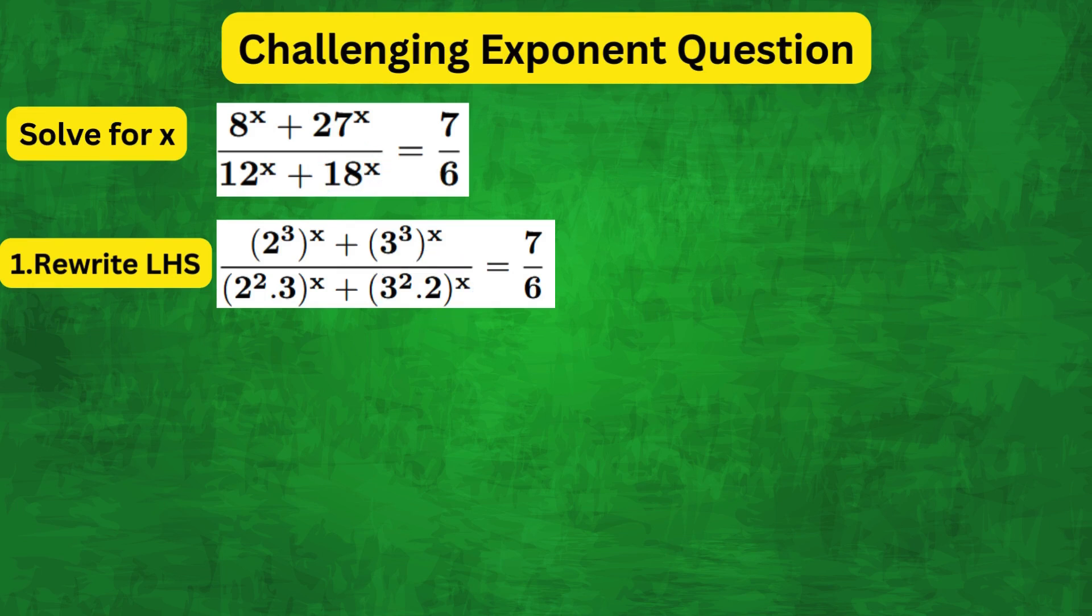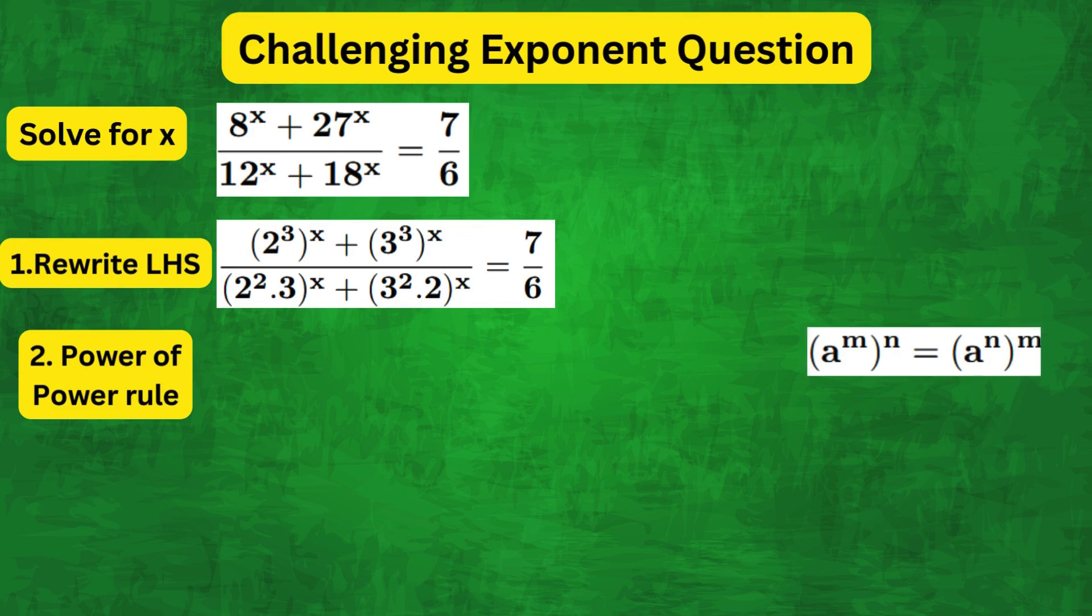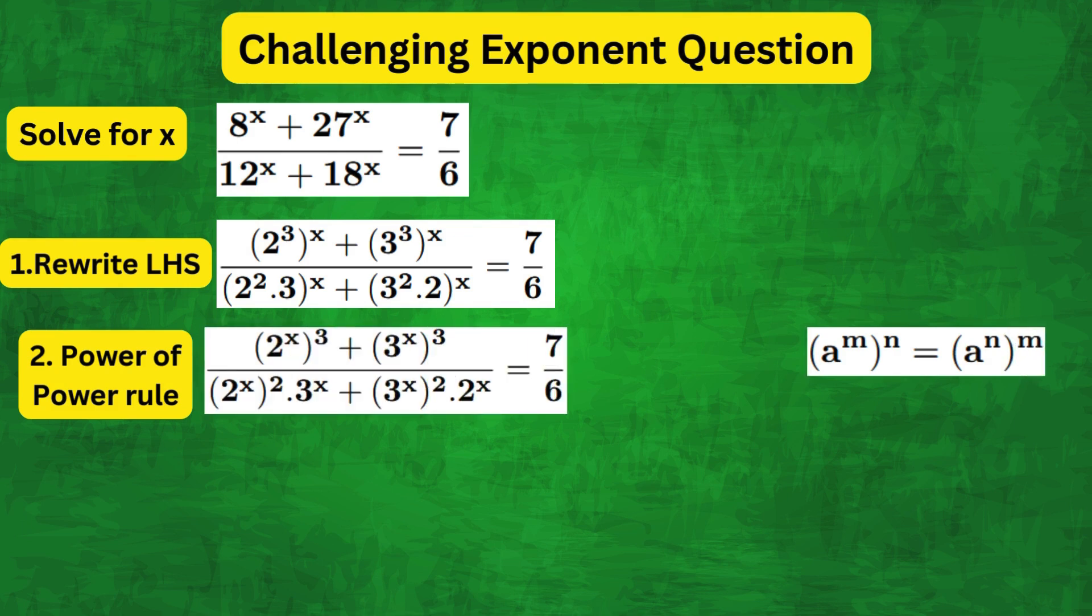Now we can use the power of a power identity to rewrite the left hand side as follows: 2 to the x whole cubed plus 3 to the x whole cubed over 2 to the x squared times 3 to the x plus 3 to the x whole squared times 2 to the x.